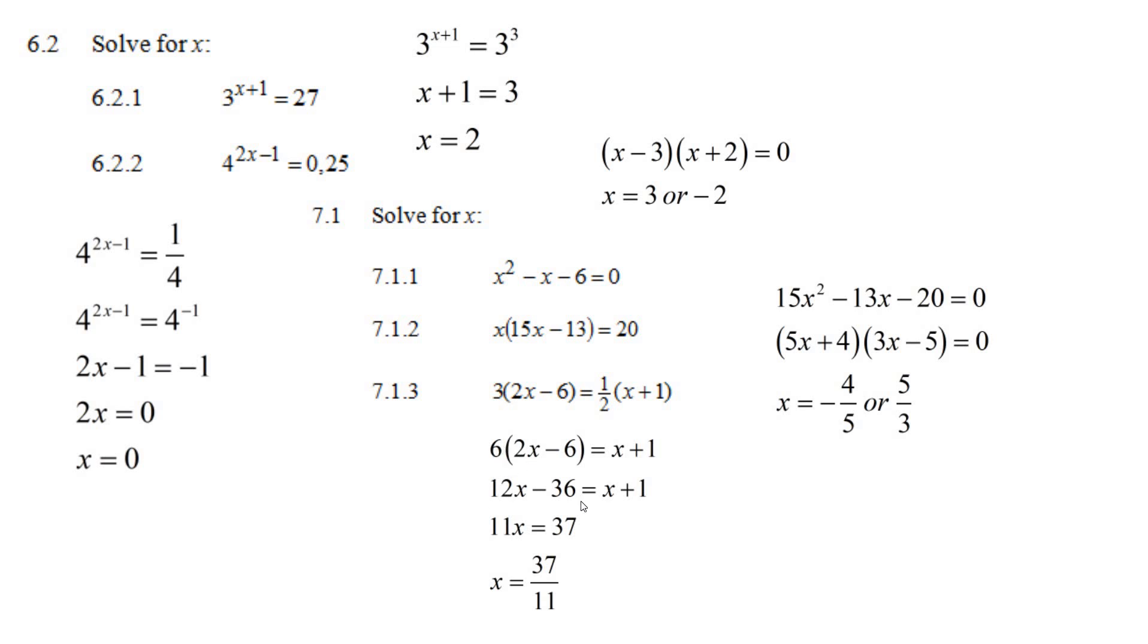Then I get 12x minus 36. I take away x from both sides. I get 11x. I add 36 to both sides, and I get 37. Now, I have to do the opposite of multiplying by 11. I've got to divide by 11. And this last question is a nasty little fraction, 37 over 11.